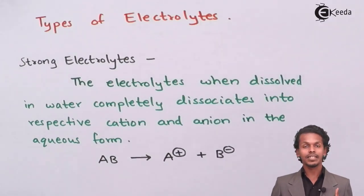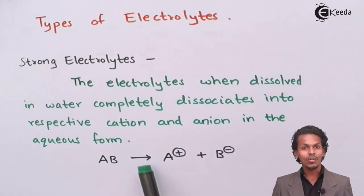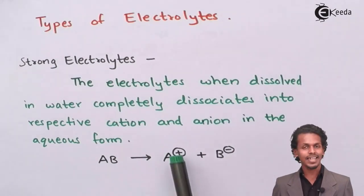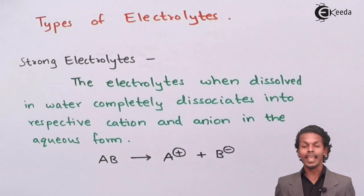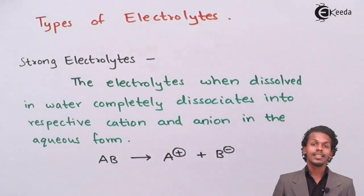For example, in this case if I have considered an example like AB, which is an electrolyte, when dissolved in water gives A+ cation and B- anion in aqueous form. So in this case suppose if I take one mole of AB, then it will dissociate completely into one mole of cation and one mole of anion.